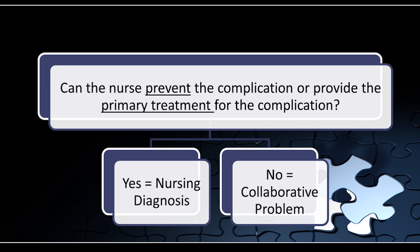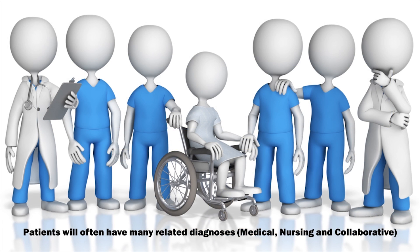If the nurse can provide the primary treatment for a complication, it is a nursing diagnosis. For example, a patient with a medical diagnosis of AIDS may have a collaborative problem of being at risk for complications of opportunistic infections. The nurse can manage and minimize complications related to the patient's immunodeficiency, but they cannot treat it alone. This same patient may have a nursing diagnosis of imbalanced nutrition less than body requirements that the nurse can intervene to manage more independently.